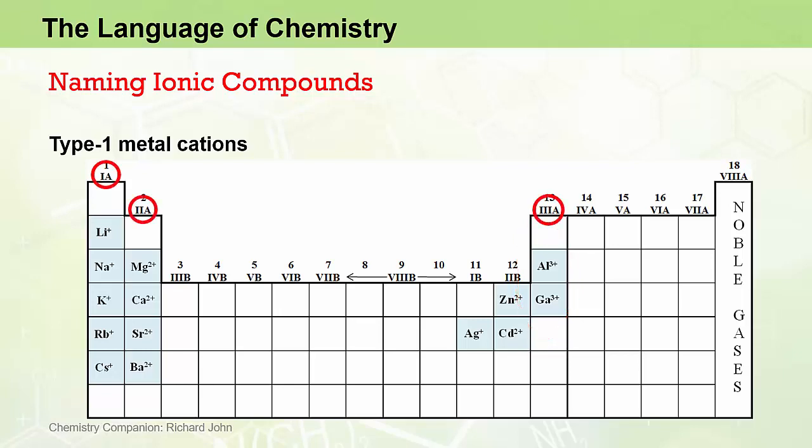Metal ions derived from group 1A, group 2A, and group 3A have charges of 1+, 2+, and 3+ respectively. So using the old naming conventions for the group names is still very useful. This even works for some metals in the middle part of the periodic table, where type 1 metal cations take on the charge indicated by their old group name. For example, the Zn2+ ion and the Cd2+ ion are derived from metals in group 2B, and the Ag1+ ion is derived from silver in group 1B. Because these are type 1 metal ions, they take their name directly from the parent metal — these ions are called the zinc ion, the cadmium ion, and the silver ion respectively.